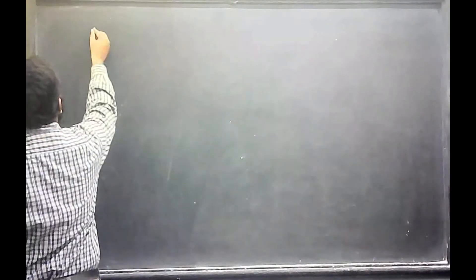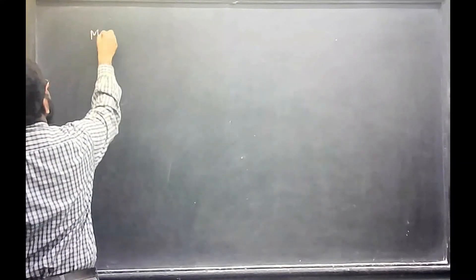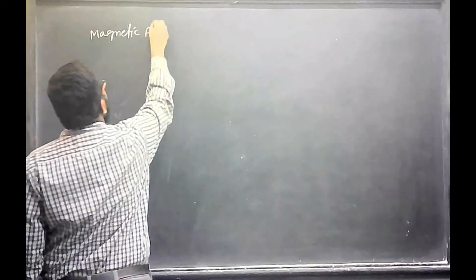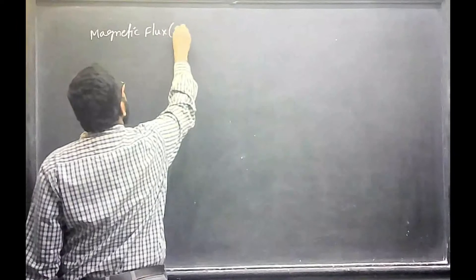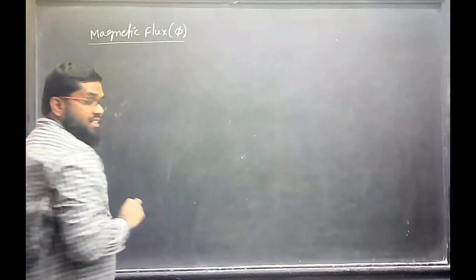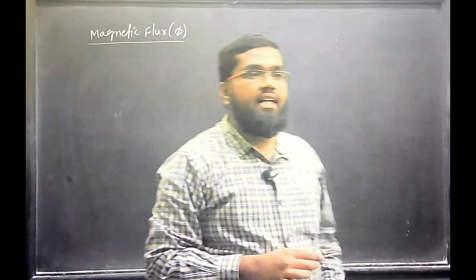So, let us define magnetic flux first. Symbol is phi. We have already defined electric flux; in a similar manner we will define the magnetic flux.